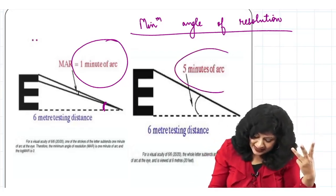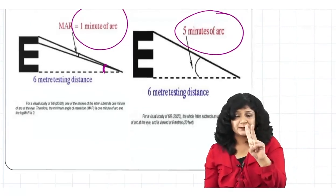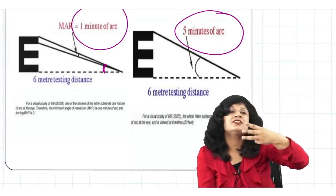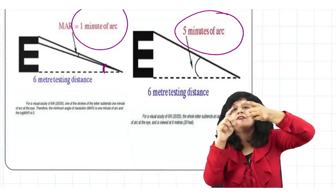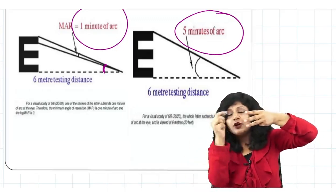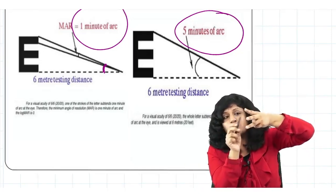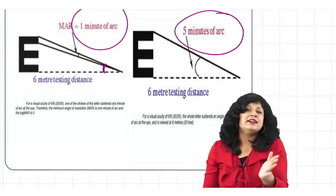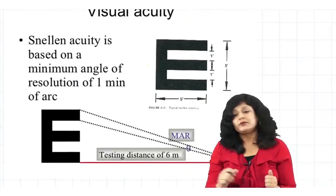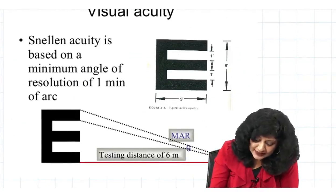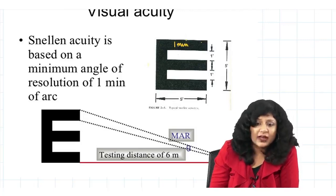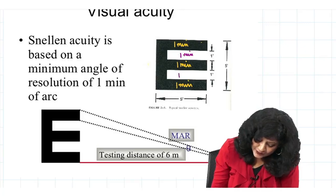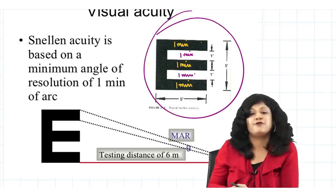So we have three limbs — three minutes — plus two gaps — two more minutes — giving a total of five minutes of arc to see the whole letter. So the minimum angle of resolution for a single feature is one minute, but to resolve the whole letter you require five minutes of arc. The angle subtended between the top and bottom of the letter must be at least five minutes of arc.